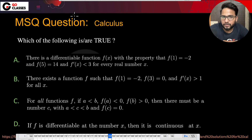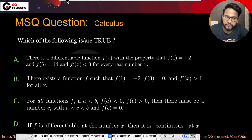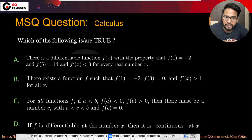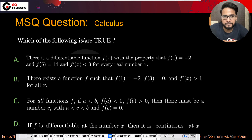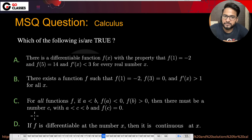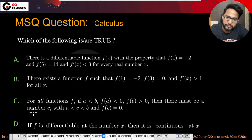This is an MSQ question which is related to calculus. They are asking which of the following is or are true. I have taken this question from this particular link. These are the four statements which are given, and they are somehow related to mean value theorems.